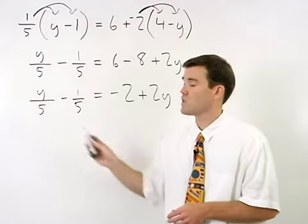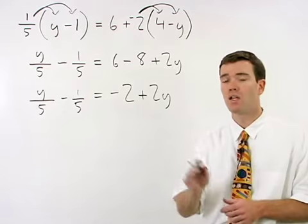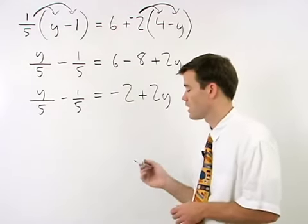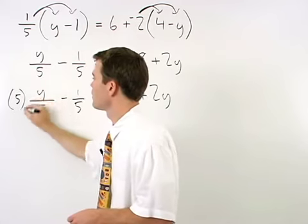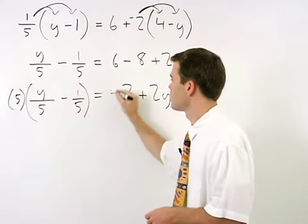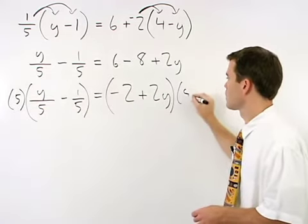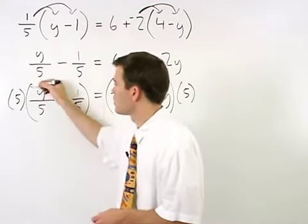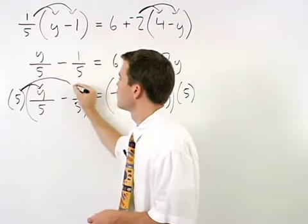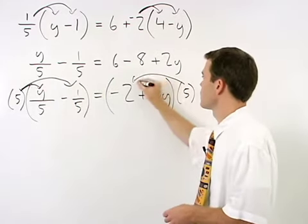Since both fractions have a denominator of 5, we can get rid of the fractions by multiplying both sides of the equation by 5. Make sure you distribute the 5 through both terms on both sides of the equation.